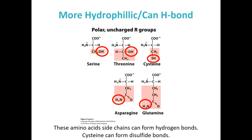Our next group, the polar uncharged amino acids, is what I would consider the more hydrophilic — they can hydrogen bond fairly easily. I've circled in red the areas capable of hydrogen bonding. The cysteine sulfhydryl group is not as strong a hydrogen bonding agent as the others, but it can form disulfide bonds, which are incredibly important when we start thinking about overall stabilization and protein structure.